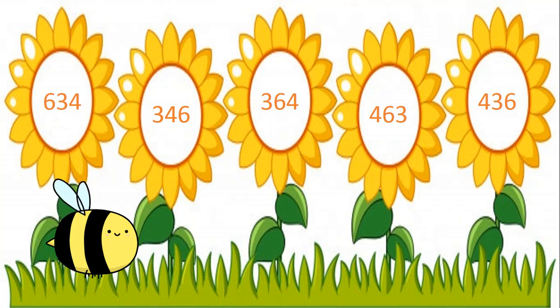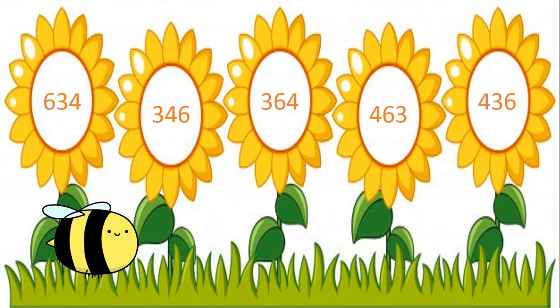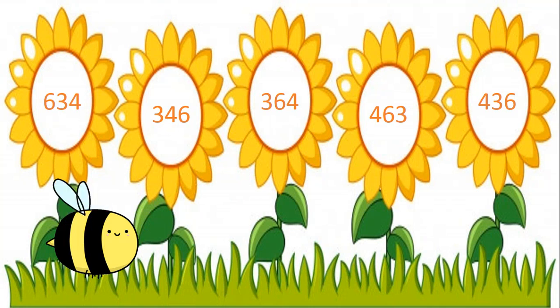To find out the smallest number, let's see the digits in the hundreds place first. That is 6, 3, 3, 4, 4. Which digit in the hundreds place is the smallest? Yes, 3. But see, we have two numbers with the same digits in the hundreds place.